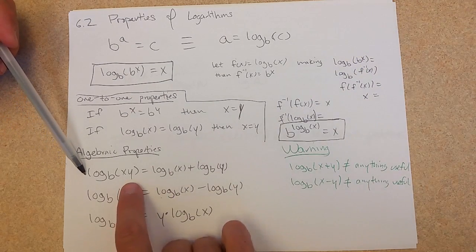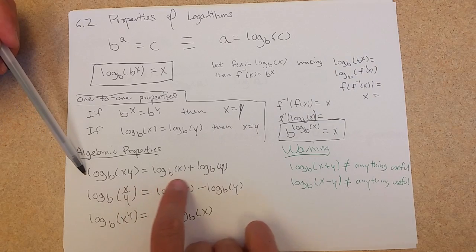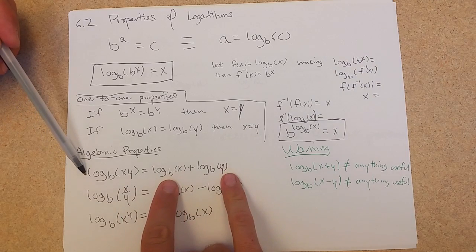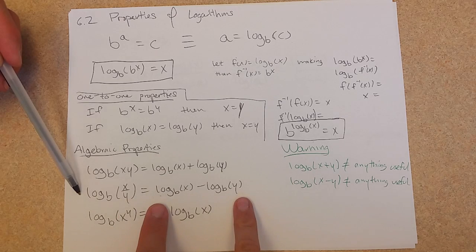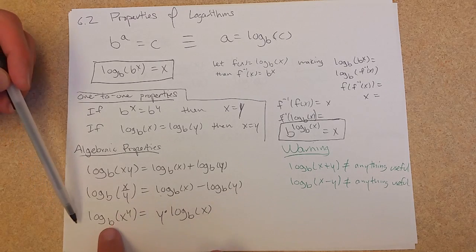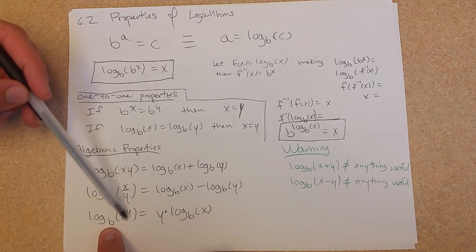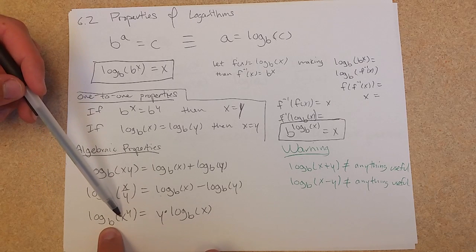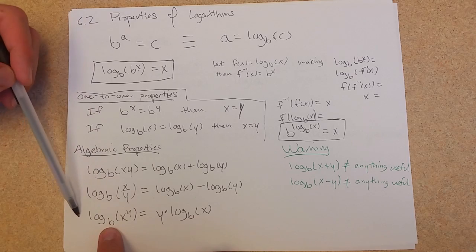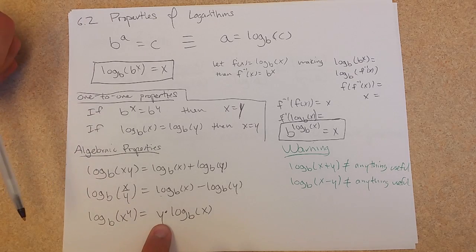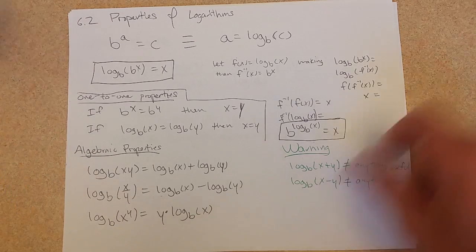Algebraic properties. Multiply inside of a log is the same as adding outside. Dividing inside a log, the same as subtracting outside. An exponential inside of a log, log base b of x to the y, you can pull the exponent out as a coefficient. So it's y times log base b of x.